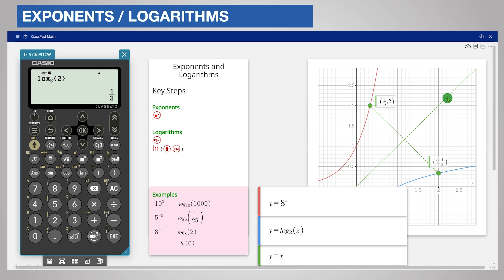To find natural logarithms, for example ln 6, use the natural log key. This is shift log base. Enter the value 6, close the bracket and the execute key.